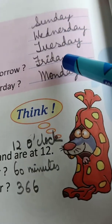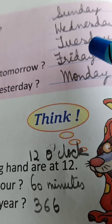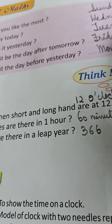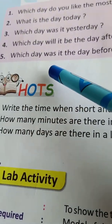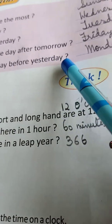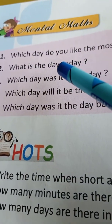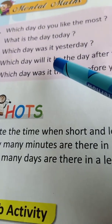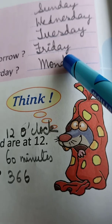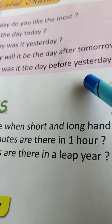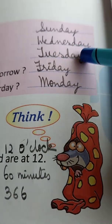Which day will it be the day after tomorrow? Tomorrow is Thursday, so day after tomorrow is Friday — write Friday. Which day will it be the day after tomorrow? Thursday. Which day was the day before yesterday? Yesterday was Tuesday, so day before yesterday was Monday — write Monday. So the answers are: Sunday, Wednesday, Tuesday, Friday, Monday.